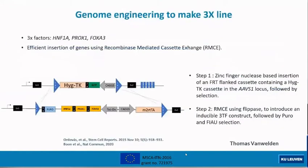First, it's the genome engineering to make what is known as the SBAT2-3x line. I start off with the SBAT2 line and then insert three genes: HNF1-alpha, PROX1, and FOXA3. We have shown in our lab that the insertion of these genes improves the differentiation of the cells to hepatocyte-like cells when induced using doxycycline.